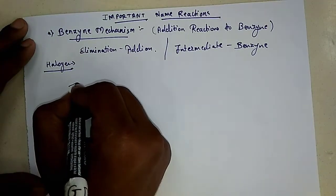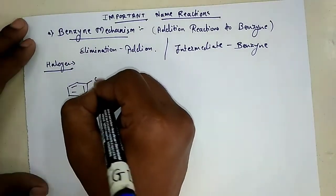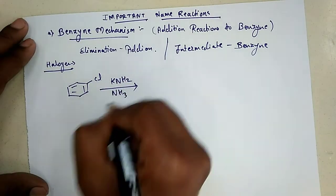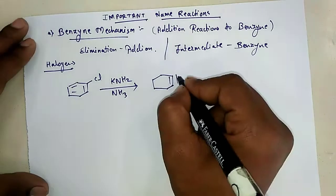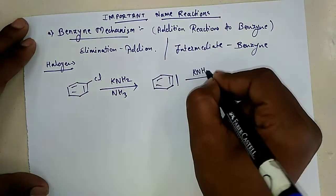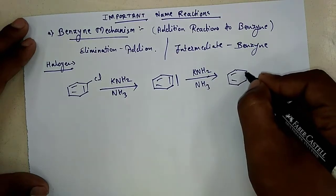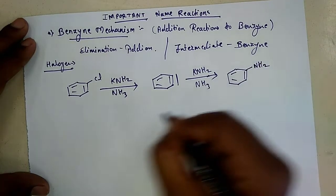So halo rings do behave as in this reaction. For example, just we take chlorobenzene with KNH2/NH3, it gives intermediate which is the benzyne. And benzyne with another molecule of KNH2/NH3 gives us aniline.